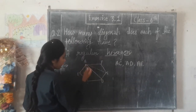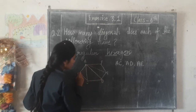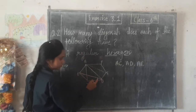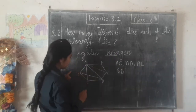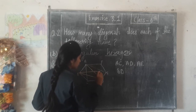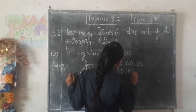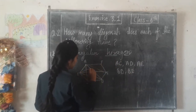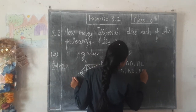Next, from vertex B. B to D, B to E, and B to F. So diagonals from B are: BD, BE, and BF.